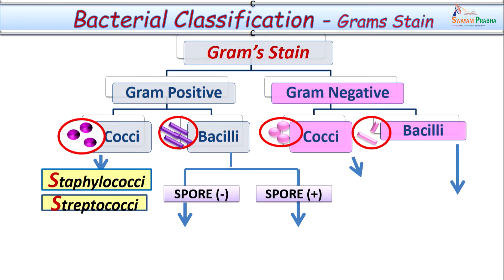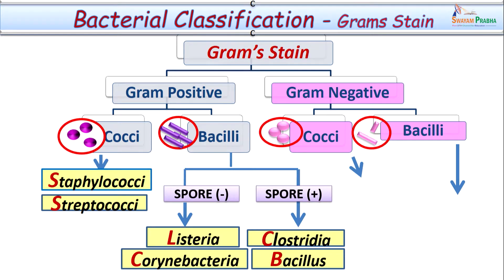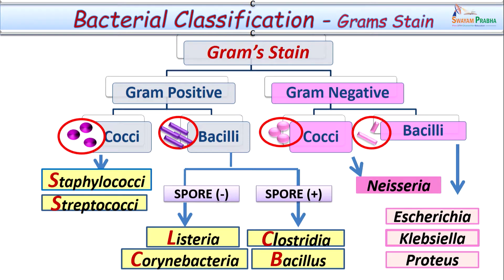Let us consider some important pathogens in each category. Gram positive cocci include staphylococci and streptococci. Gram positive bacilli — those without spores include Listeria and Corynebacteria, while spore-forming ones are Clostridia and Bacillus. Gram negative bacteria form a major group encountered in day-to-day practice. Examples of gram negative cocci are the Neisseria group, and gram negative bacilli include Escherichia, Klebsiella, Proteus, Salmonella, Shigella, and many others.